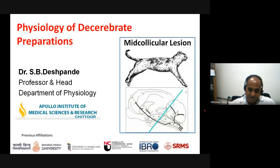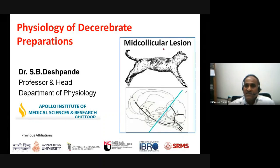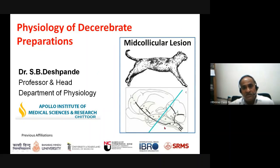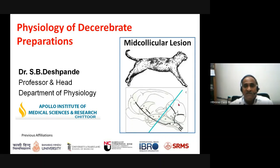The physiology of the decerebrate preparation was first done by Sir Charles Sherrington and it goes with his name — it is known as Sherringtonian decerebration. The Sherringtonian decerebration is the mid-collicular sectioning, examining the various reflexes and other effects. This topic gives us important information about various CNS lesions, especially those which keep the hindbrain intact. Decerebrate preparations are also known as hindbrain preparations.